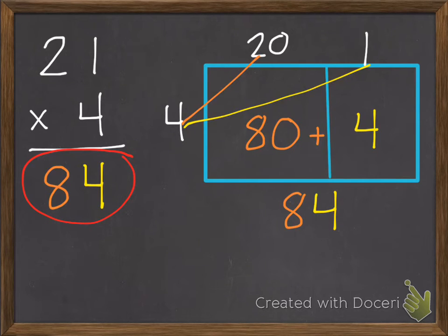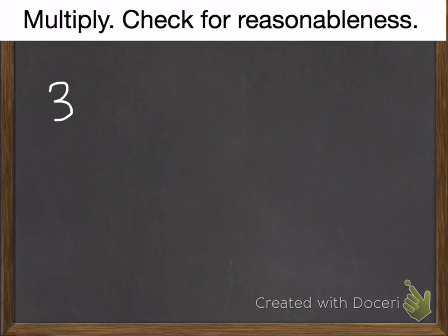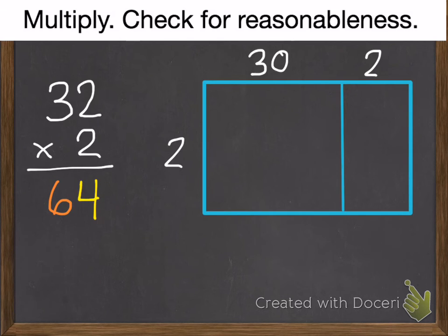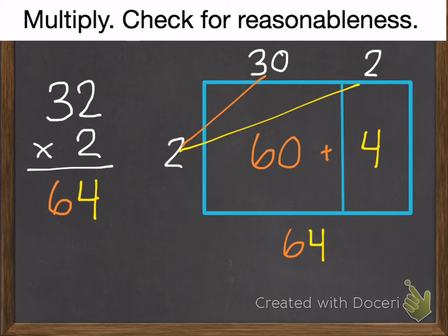Now I want you to do the next two practice problems. Here's your first practice problem. I want you to multiply and to check it for reasonableness. So draw an area model when you're done. Go ahead and pause. Okay, 2 times 2 is 4. 2 times 3 tens is 6 tens. Here's our area model to check. 2 times 2 is 4. 2 times 30 is 60. 60 plus 4 is 64. So we're good.